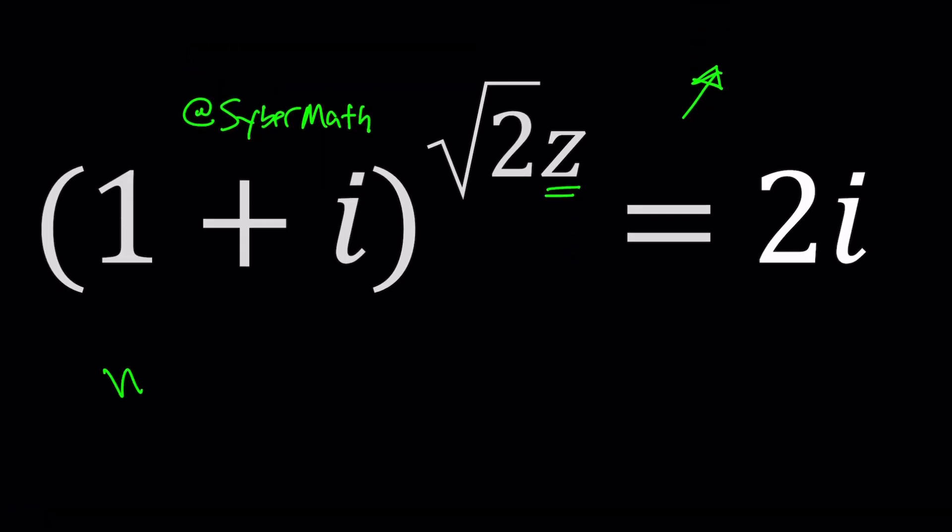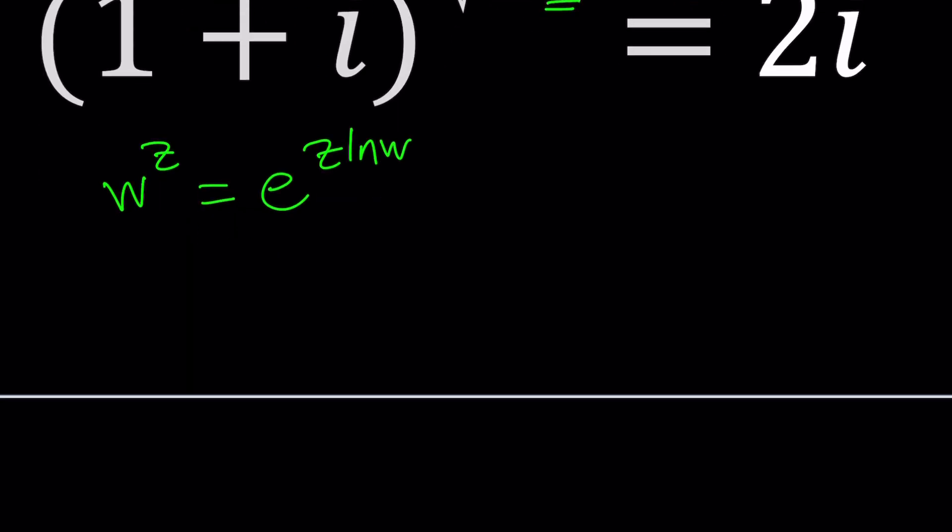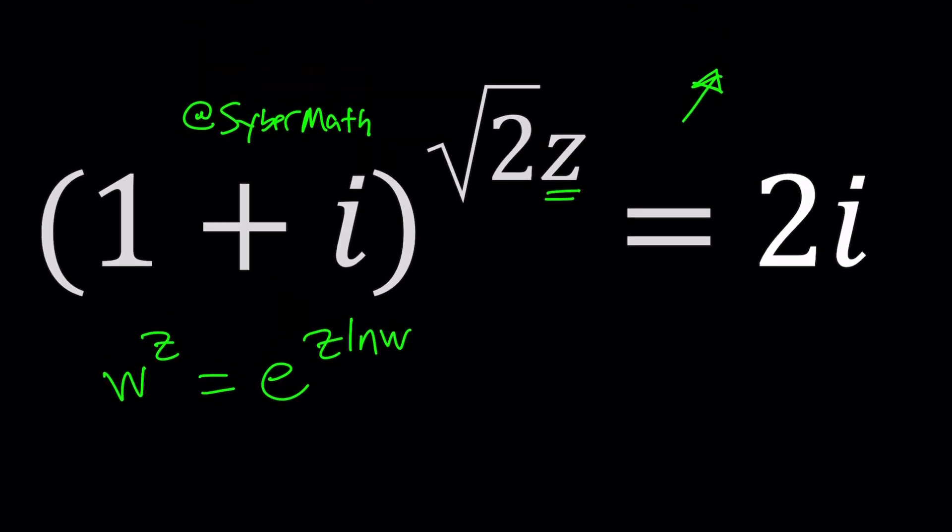First of all I want you to realize that whenever you have w to the power z that can be written as e to the power z ln w. Of course this also goes for z to the w same way but I wanted to use w to the z because we have a z here, sort of make it a little more friendly.